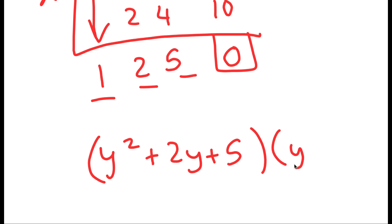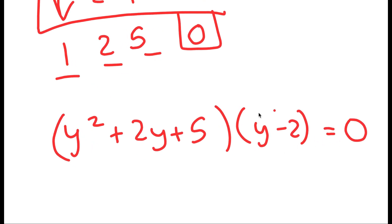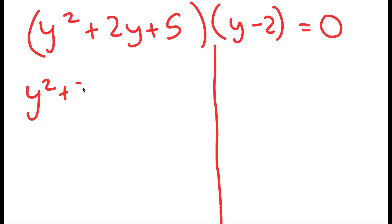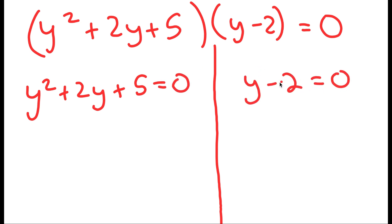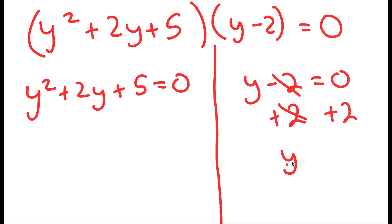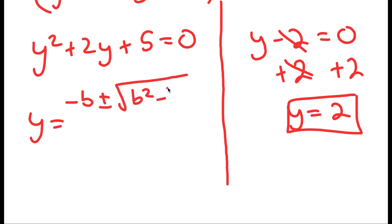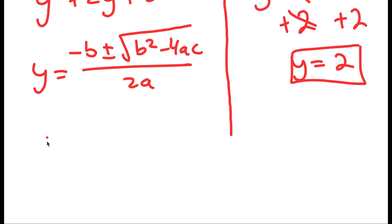Meaning y squared plus 2y plus 5 times y minus 2 is equal to 0. I'm going to divide this into two equations: y squared plus 2y plus 5 equals 0, and y minus 2 equals 0. For y minus 2 equals 0, I add 2 on both sides to get y equals 2. For y squared plus 2y plus 5 equals 0, I'm going to use the quadratic formula: negative b plus or minus the square root of b squared minus 4ac, all over 2a. So I get y equals negative 2 plus or minus the square root of 2 squared, which is 4.